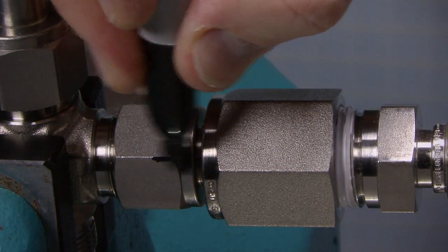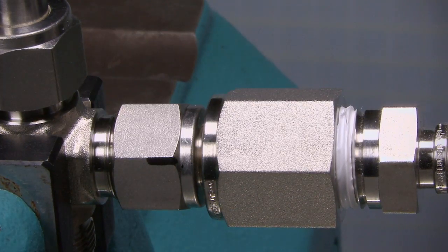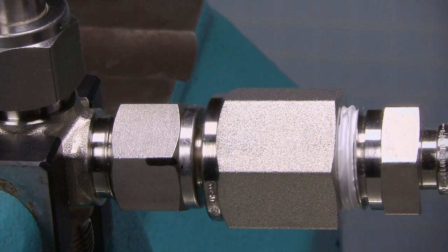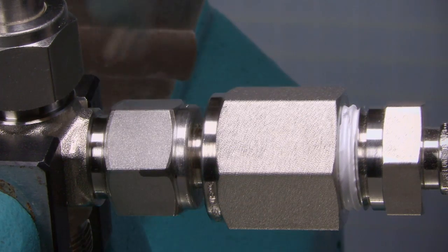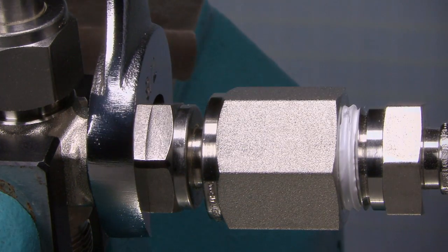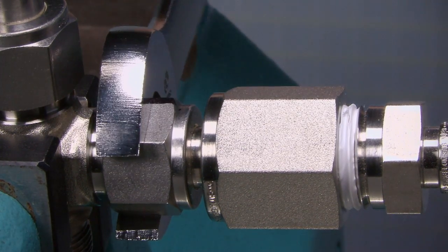Mark the nut at the six o'clock position. Marking the nut at six o'clock leaves no doubt as to the starting and ending positions. While holding the fitting body steady, tighten the nut one and one-quarter turns to the nine o'clock position.